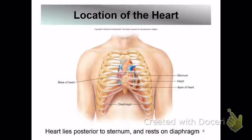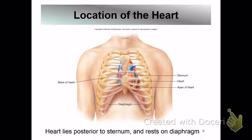The heart lies posterior to the sternum — behind that sternum bone from Anatomy 201 — and it sits on the diaphragm. The diaphragm is what contracts and relaxes as you breathe, separating the respiratory from the digestive system.